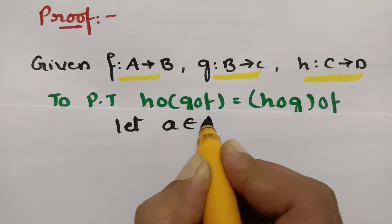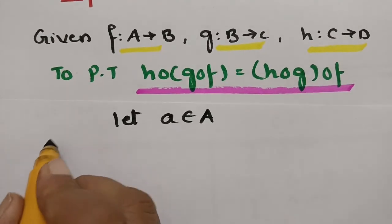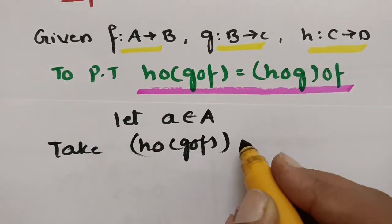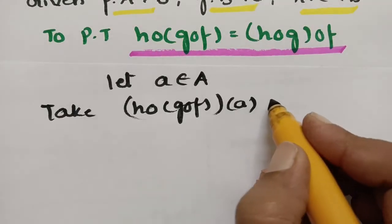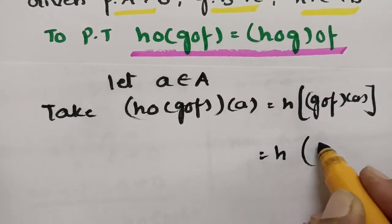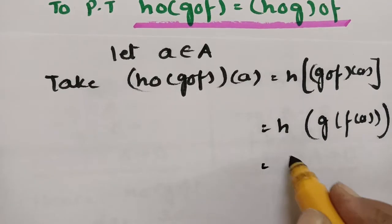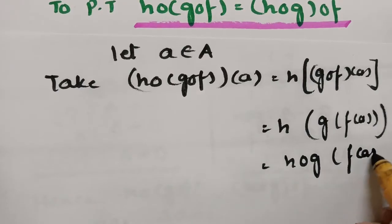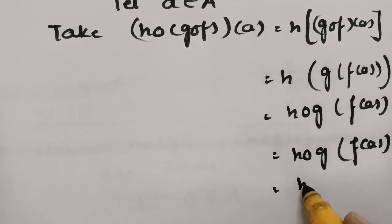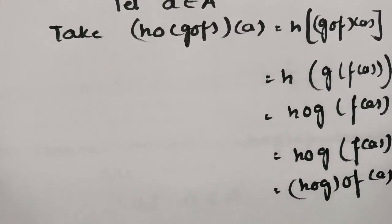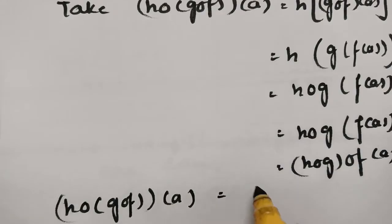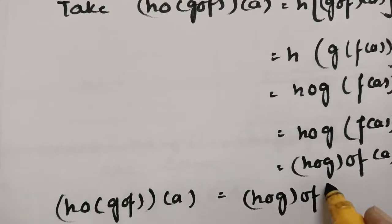Let small a belong to capital A, since the domain is the set A. Now we take the LHS: H∘(G∘F)(a). This equals H of (G∘F)(a), which can be written as H(G(F(a))). This can then be written as (H∘G)(F(a)), which equals (H∘G)∘F(a).